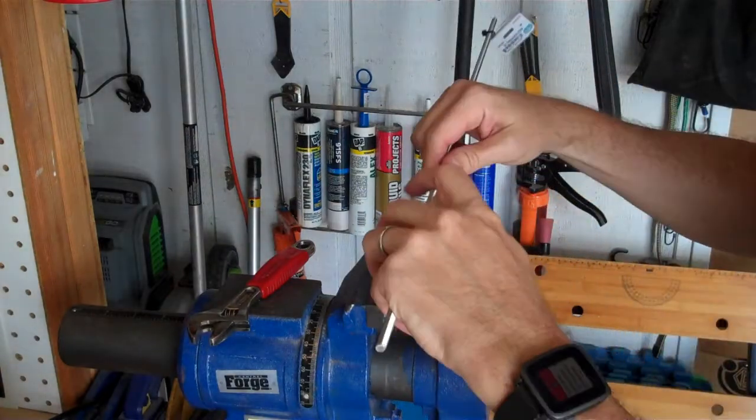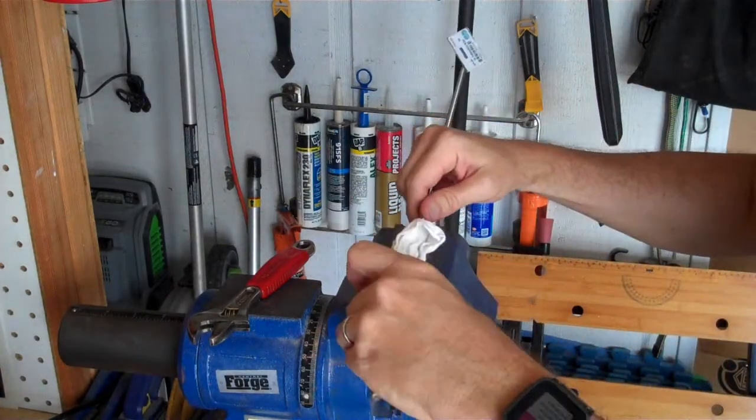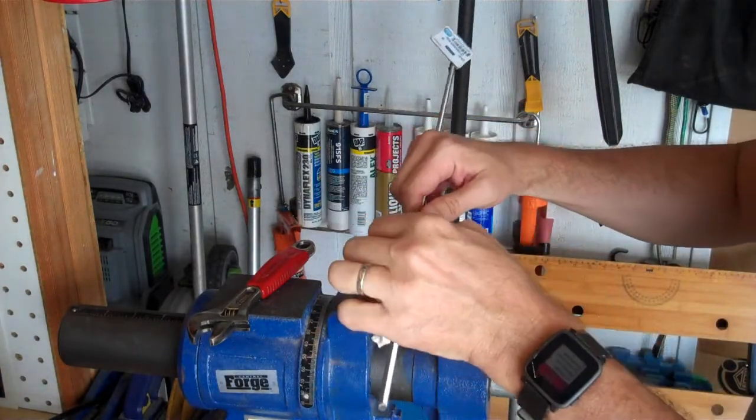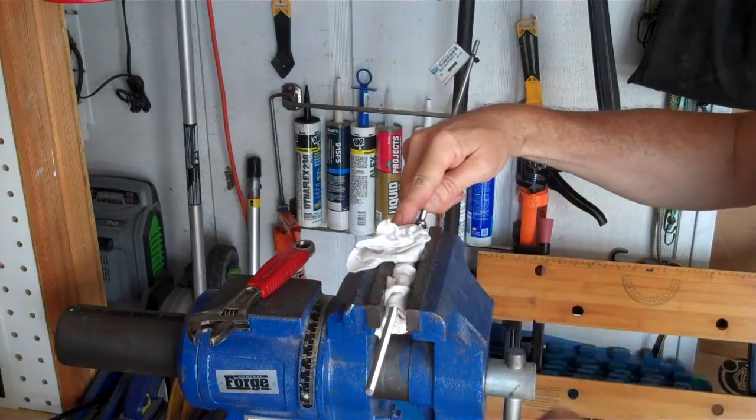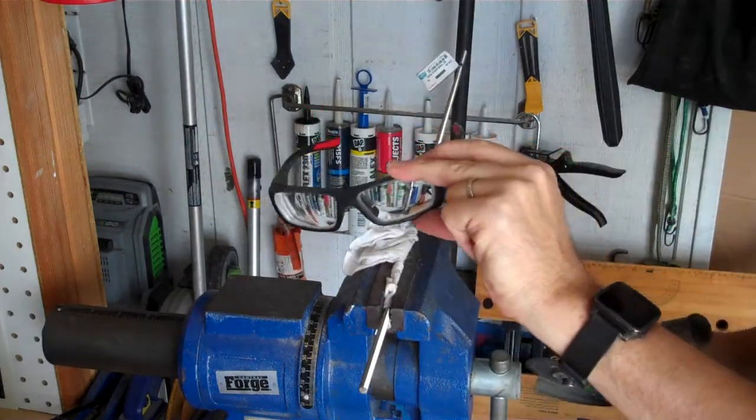If you're going to clamp a rod with threads in a vise, make sure you use a soft-jawed vise or use some type of padding so you don't mess up your threads. Make sure you're using eye protection.